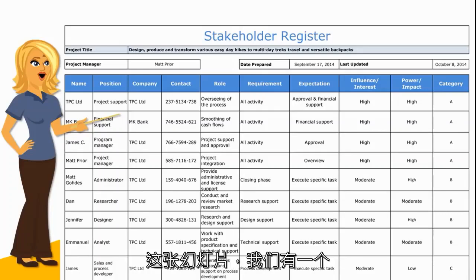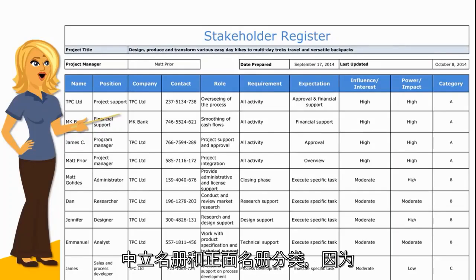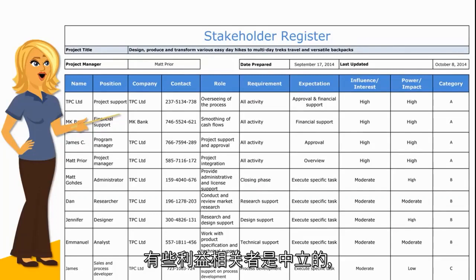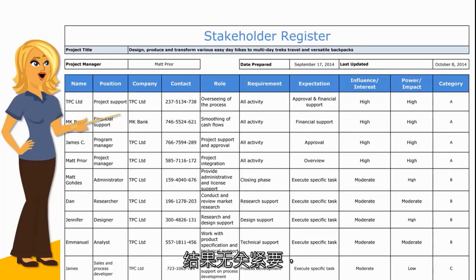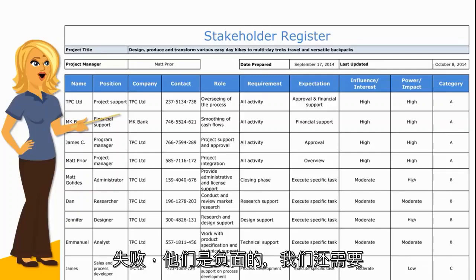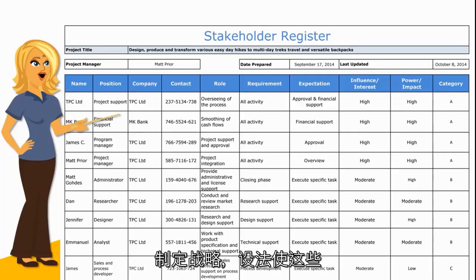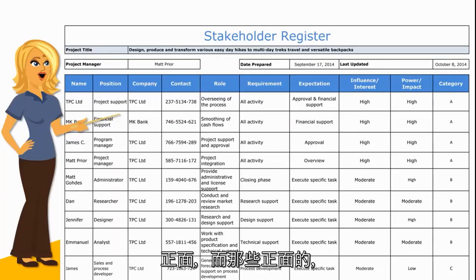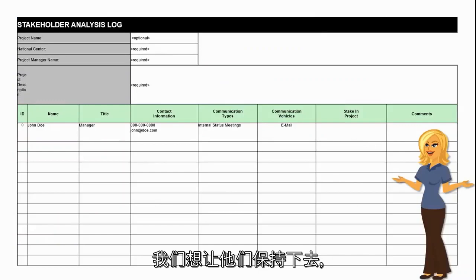And also, we have a category of neutral, resistor, and positive. Because some stakeholders are neutral — right there in the middle, they're neither here nor there about the outcome. Some stakeholders want your project to fail, they are negative. And we also need to strategize how to win those stakeholders from being negative to being positive. And those who are positive, we want them to stay right there.